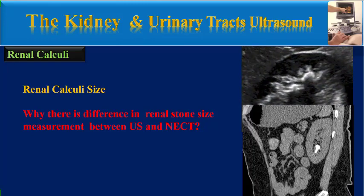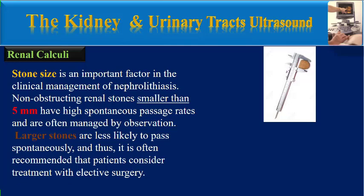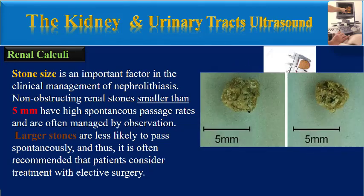Stone size is an important factor in the clinical management of nephrolithiasis. Non-obstructing renal stones smaller than 5 mm have high spontaneous passage rates and are often managed by observation. Larger stones are less likely to pass spontaneously, and thus it is often recommended that patients consider treatment with elective surgery.